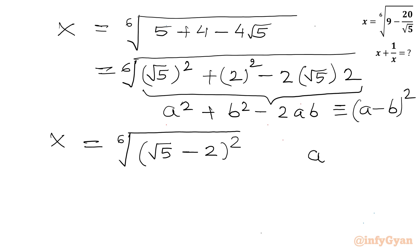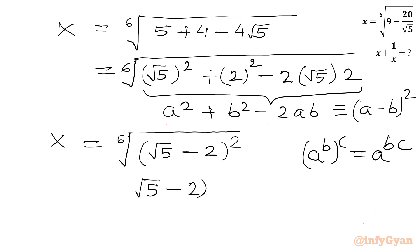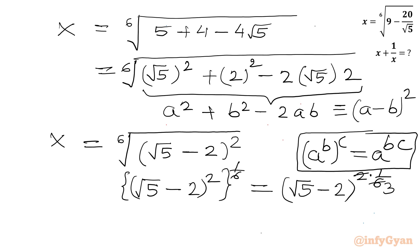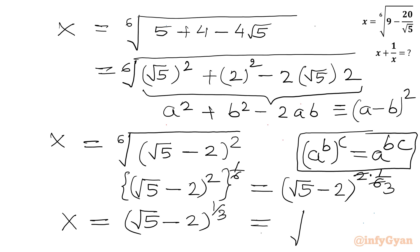Now I will use the identity (a^b)^c = a^(b×c). I can write the right-hand side as (√5 minus 2)² raised to the power 1 over 6. Using this exponential property, this becomes (√5 minus 2) to the power 2 times 1/6, and we can simplify 2/6 to 1/3. So x equals (√5 minus 2) to the power 1/3, or equivalently the cube root of (√5 minus 2). This is our simplification so far.